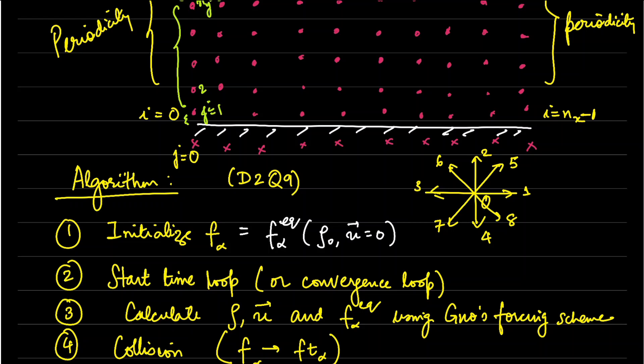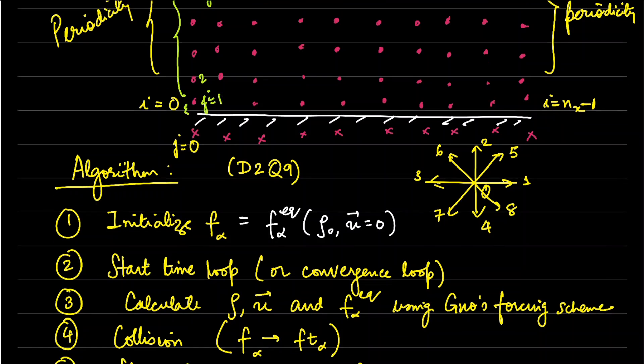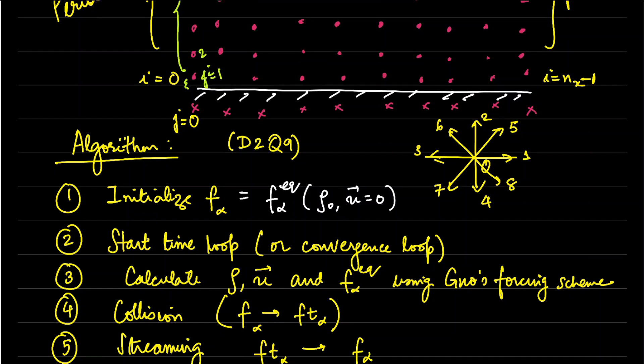The convergence loop basically means you look at the change in velocity as a function of iteration number and see whether the solution changes substantially, or if it doesn't change you can stop the calculation. Those are the two options. I will go with the time loop.